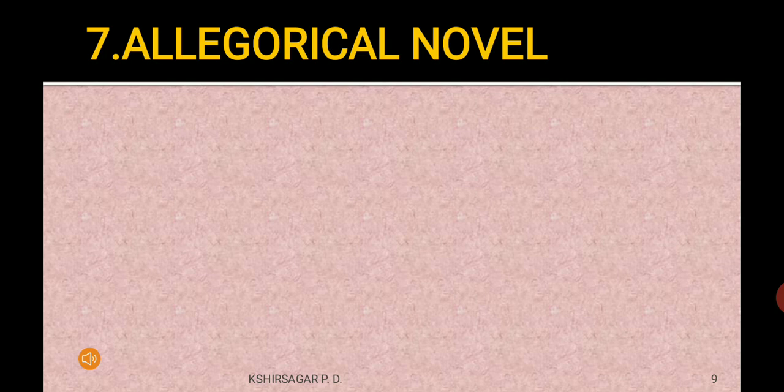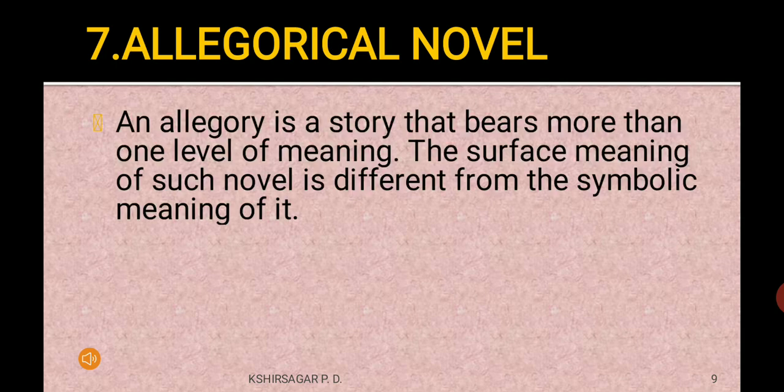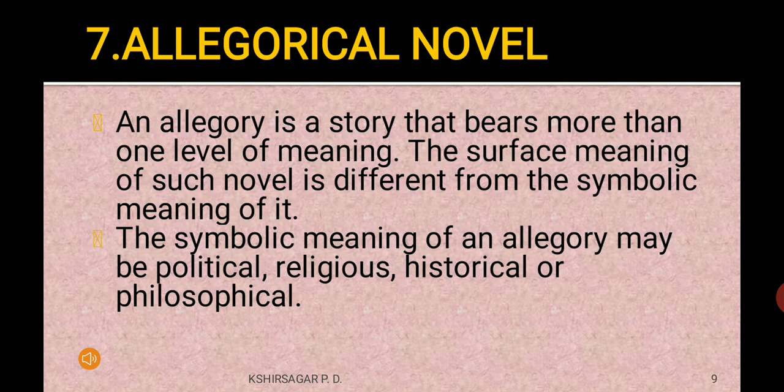Next is the allegorical novel. An allegory is a story that bears more than one level of meanings. The surface meaning of such a novel is different from the symbolic meaning of it. There is an outer meaning and a symbolic meaning. The symbolic meaning of an allegory may be political, religious, historical, or philosophical.